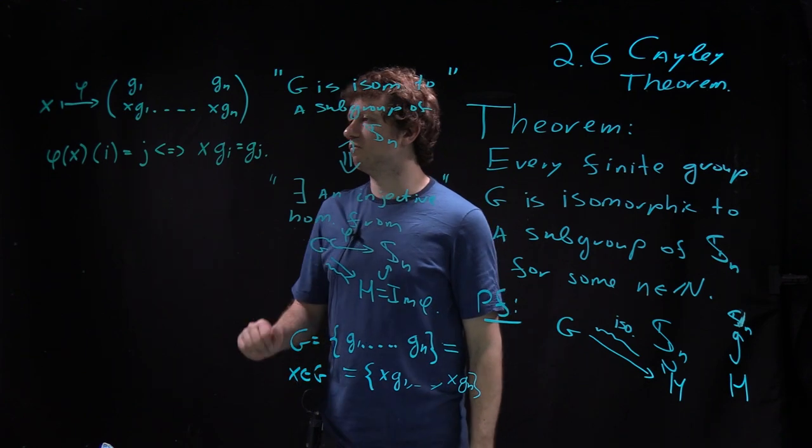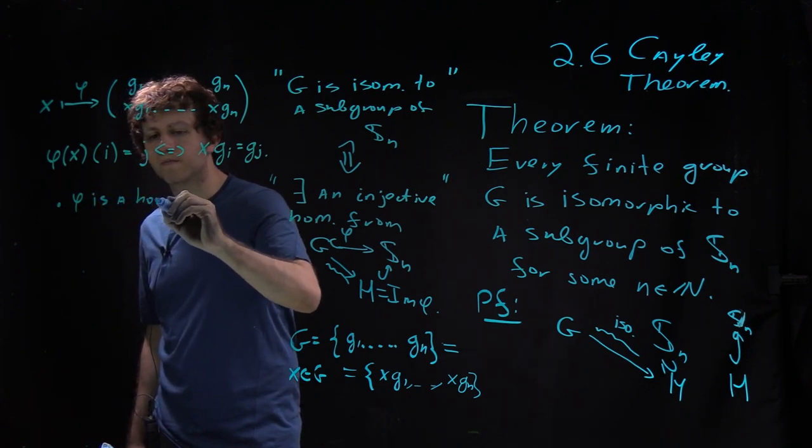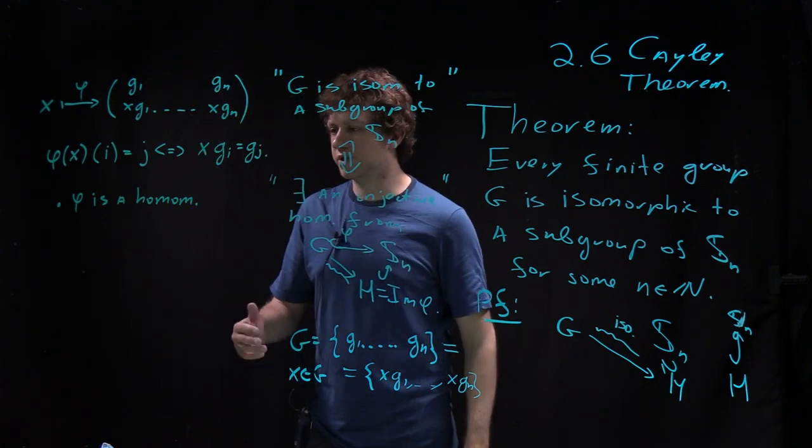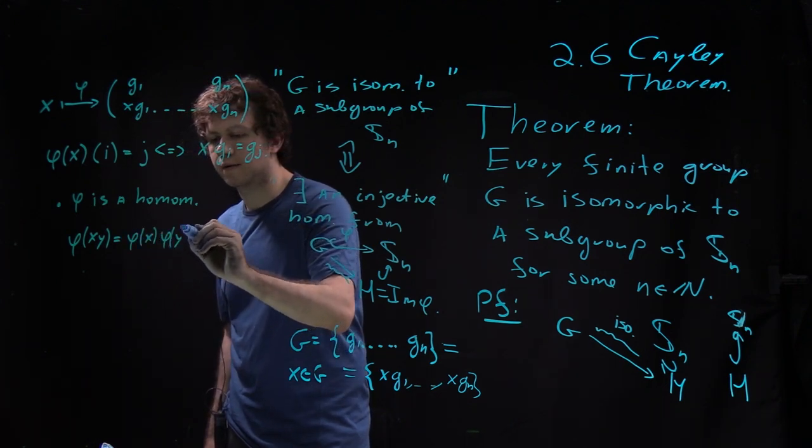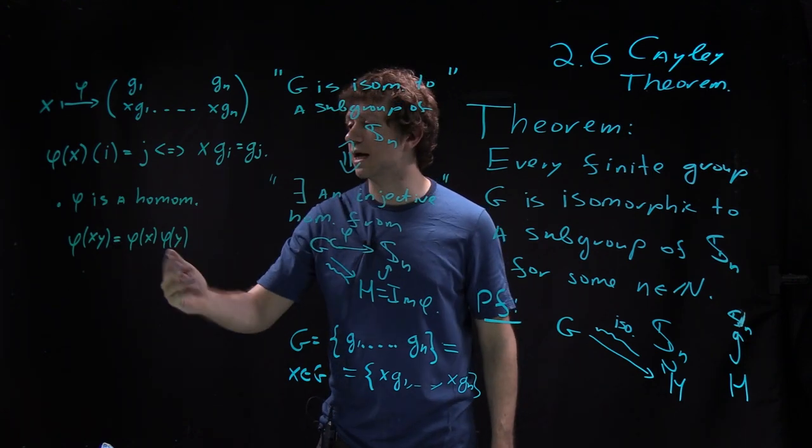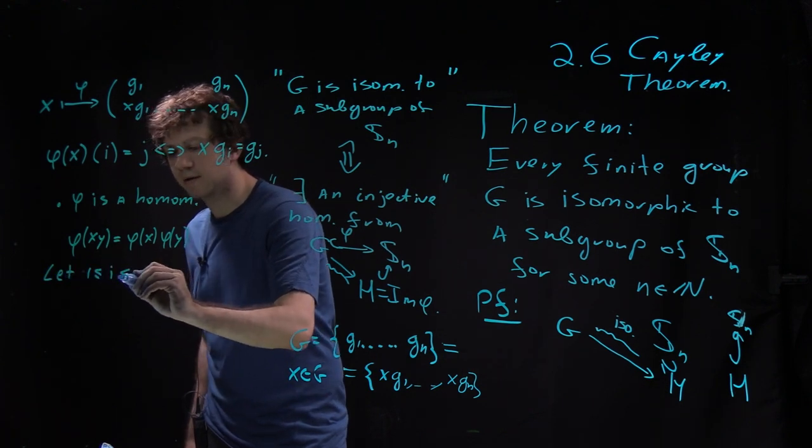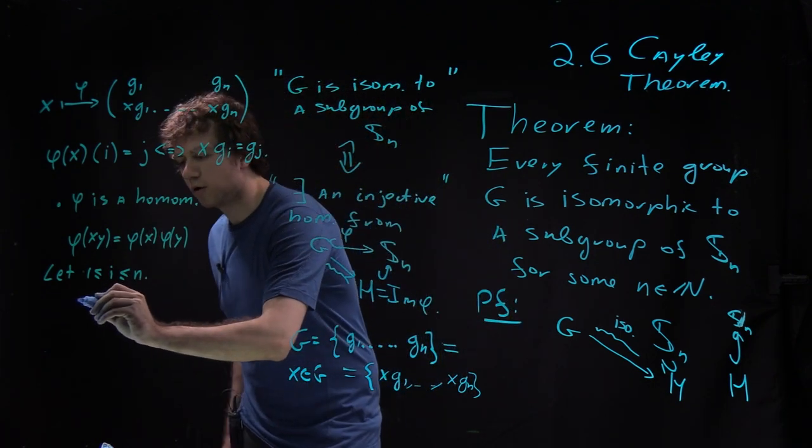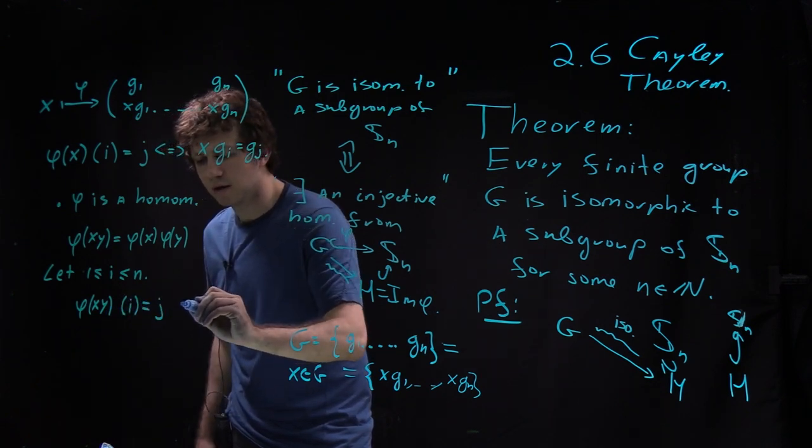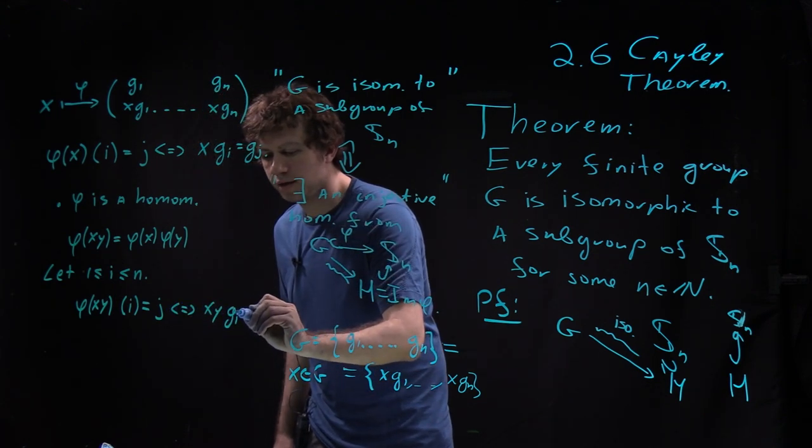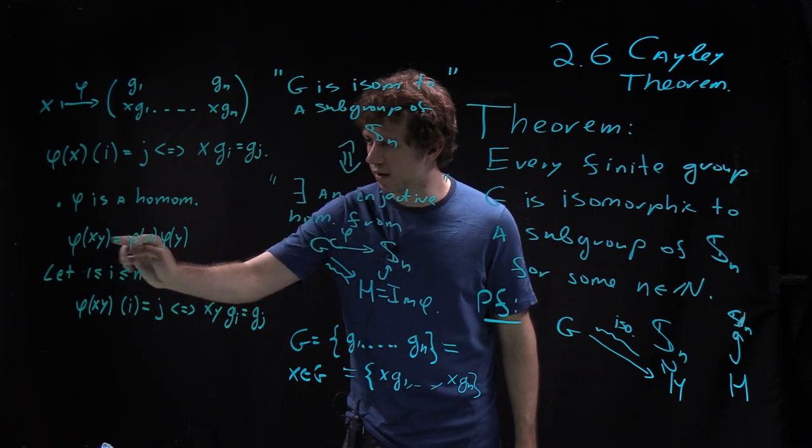First thing is that phi is a homomorphism. And of course it means that phi of XY equals phi of X phi of Y. And how to check two maps are the same—you need to apply them to something. So let i be some element from one to n. Then I can compute phi of XY. So phi of XY, if I apply to i, equals j if and only if XY g_i equals g_j. That's perfect. So now I know what my left-hand side does.